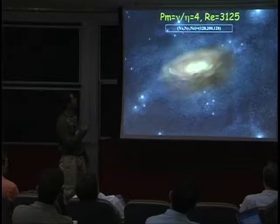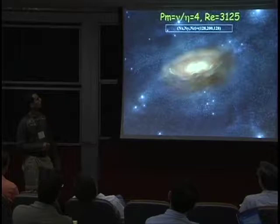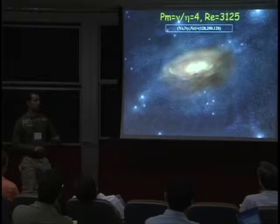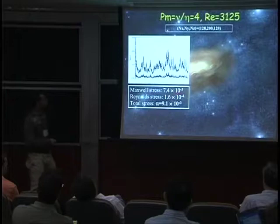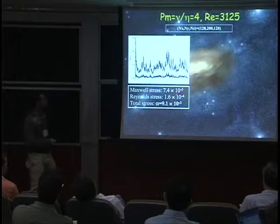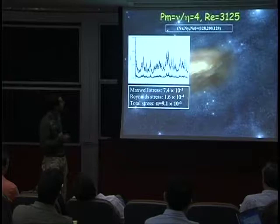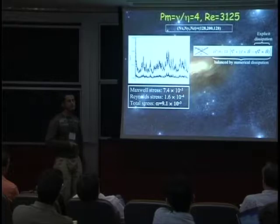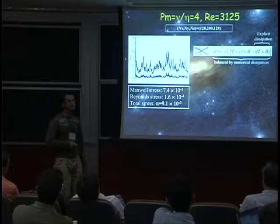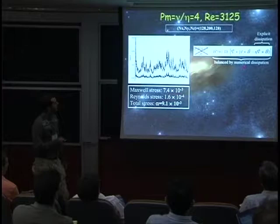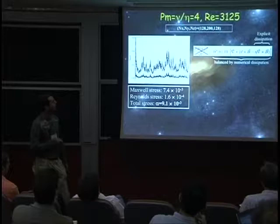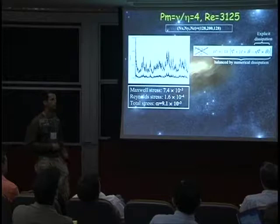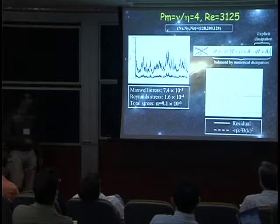In the following I'll concentrate on a run with a Reynolds number of roughly 3000 and PM equal to 4, which translates into a magnetic Reynolds number of about 12,000 — about three times smaller than what we measure for the numerical dissipation at this resolution. When you run that simulation, you get a time history of alpha of the order of 10^-2. You can then do the same analysis: now you have an explicit dissipation term on the right-hand side of the induction equation, and all of it is balanced by numerical dissipation again. You want this residual to be much smaller than the explicit dissipation at all scales.